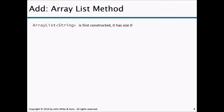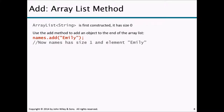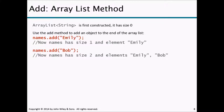Add ArrayList method: When an ArrayList is created, the default size is zero. Use the add method to add an object to the end of the ArrayList. For example, names.add("Emily") adds Emily so the size becomes 1. Then names.add("Bob") gives us two elements: Emily and Bob. The size of the ArrayList is now two.